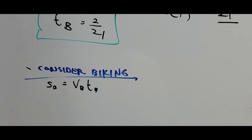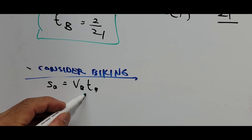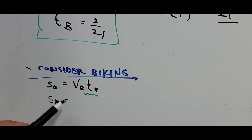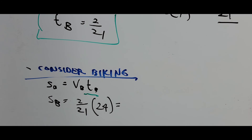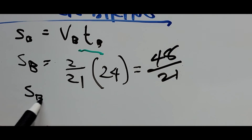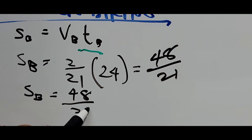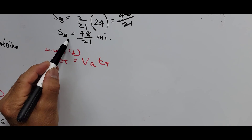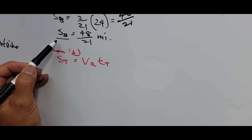Now that we found time biking T_B equals 2/21, we substitute into the biking distance equation. Distance biking equals 24 miles per hour times 2/21, which equals 48/21 miles. Since distance biking equals distance walking, both are 48/21 miles.